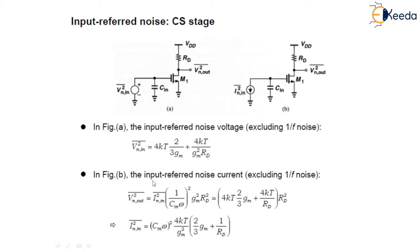The input-referred noise current can be found from this particular equation by simply multiplying this equation by RD².